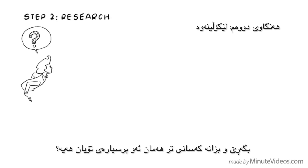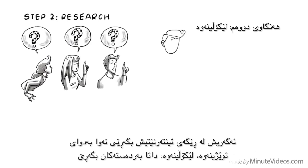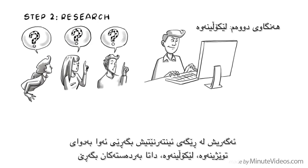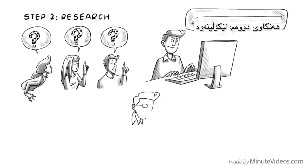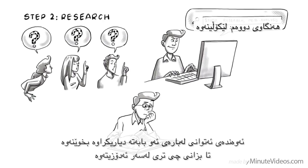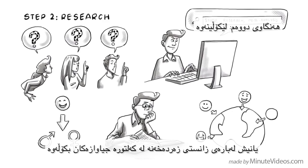Step 2: Research. Find out if other people have asked the same or similar questions. If you research online, use search terms like study, research, or meta-analysis, which is a summary of research for a specific topic. Read as much as you can about your particular subject. For example, research happiness based on gender or study the science of smiling in different cultural contexts.